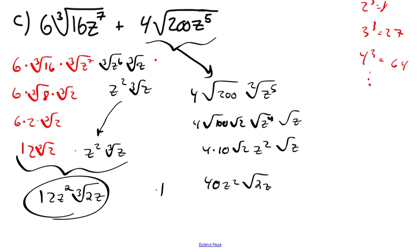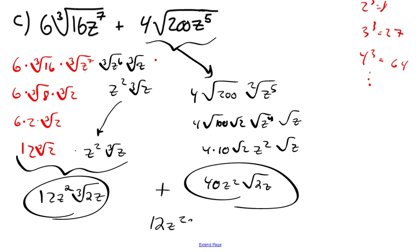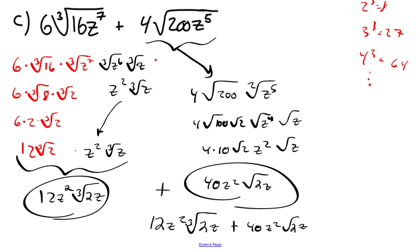Our final answer combines both sides. But the left side has a third root and the right side has a square root, so we cannot combine them. The final answer is 12z squared times the third root of 2z, plus 40z squared times the square root of 2z. You could potentially factor out a common factor, but we'll leave the answer in this simplified form.